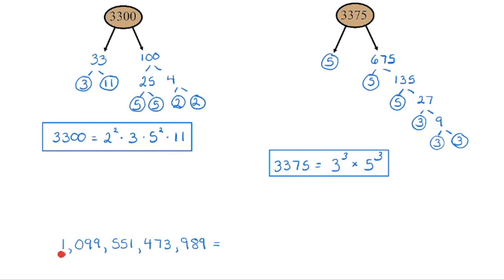At the end of 2019, a computer was able to produce an algorithm, and the number 1,099,551,473,989 is the largest number to date that's been factored into two prime numbers. As you get into larger and larger numbers, they become harder to get the prime factorization. Cybersecurity algorithms depend on how difficult it is to find the prime factorization of really large numbers — banking security, internet security — all of those algorithms rely on how hard it is to get those prime factorizations.